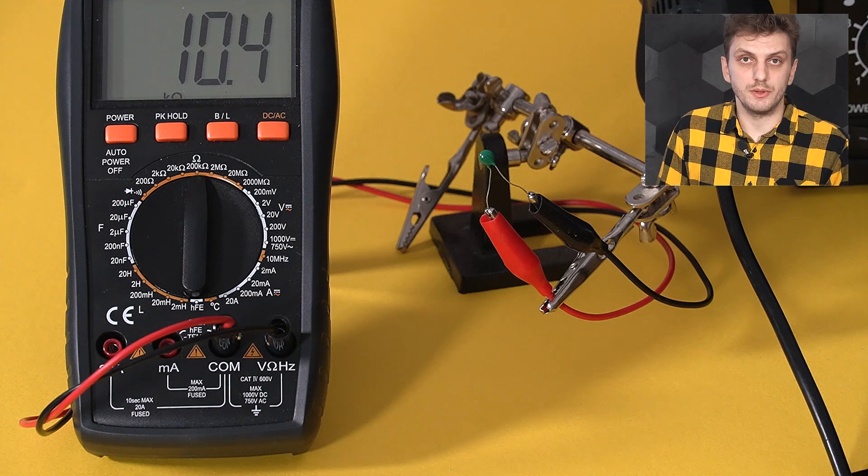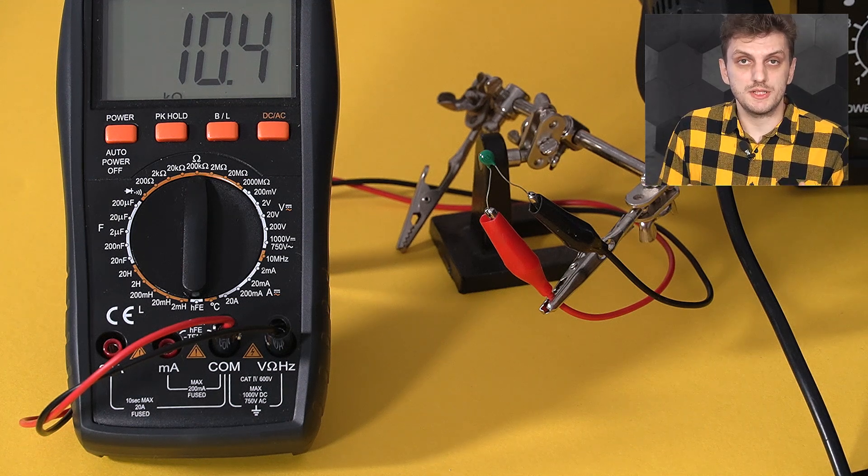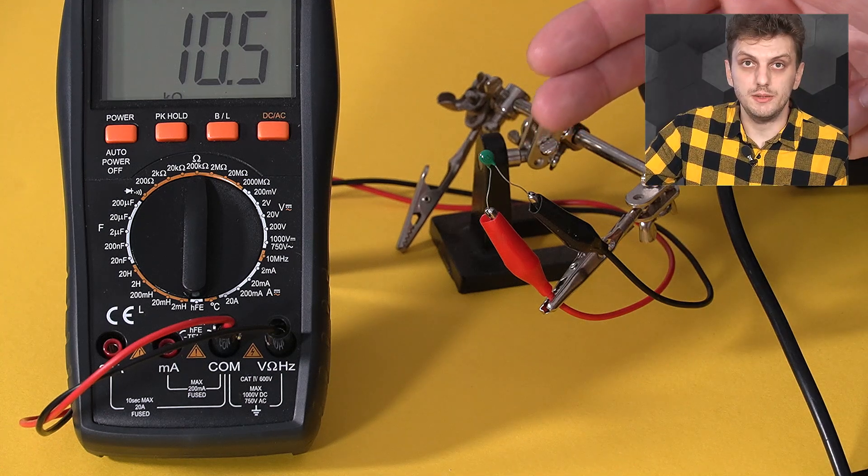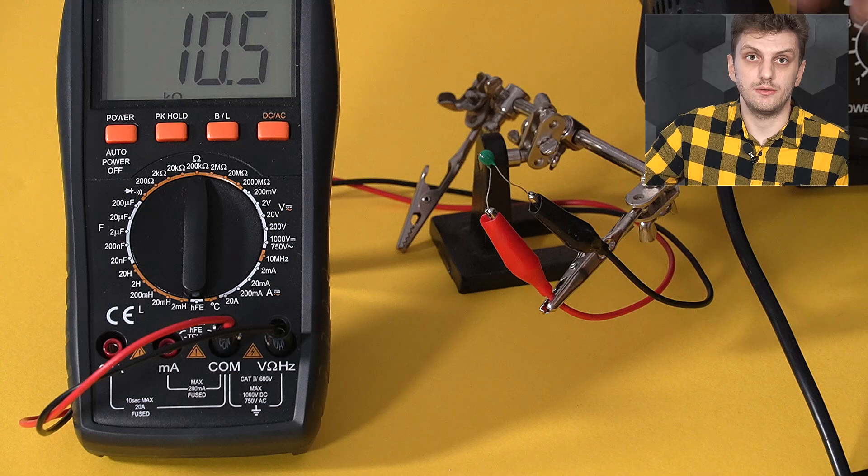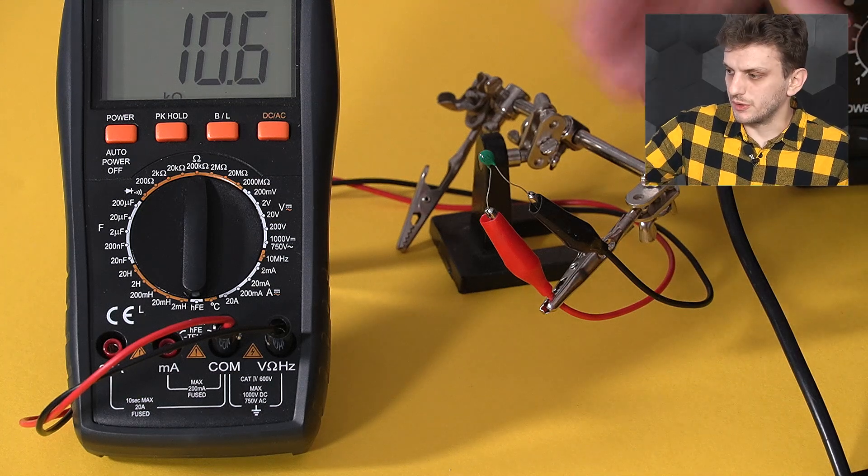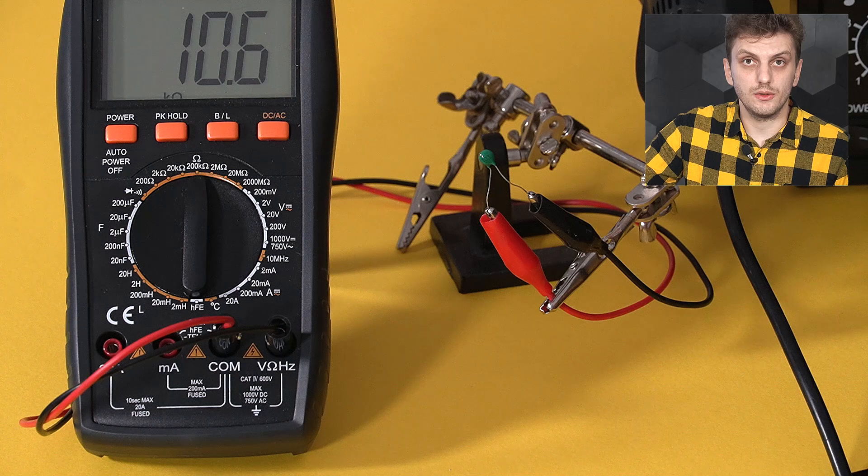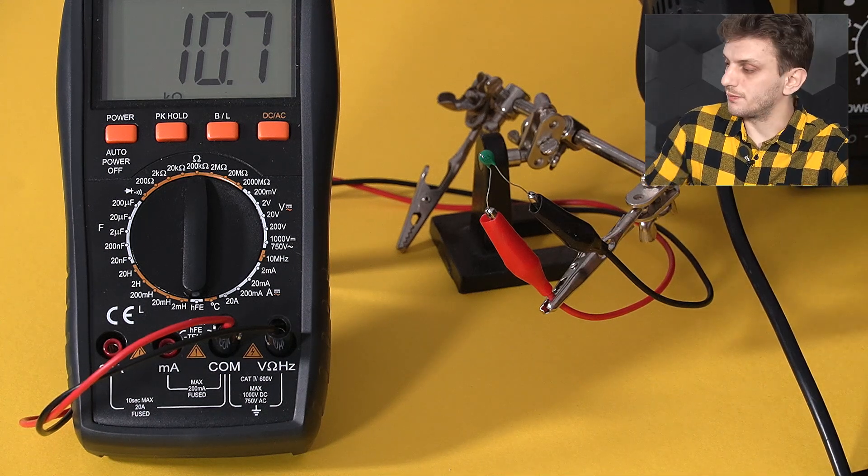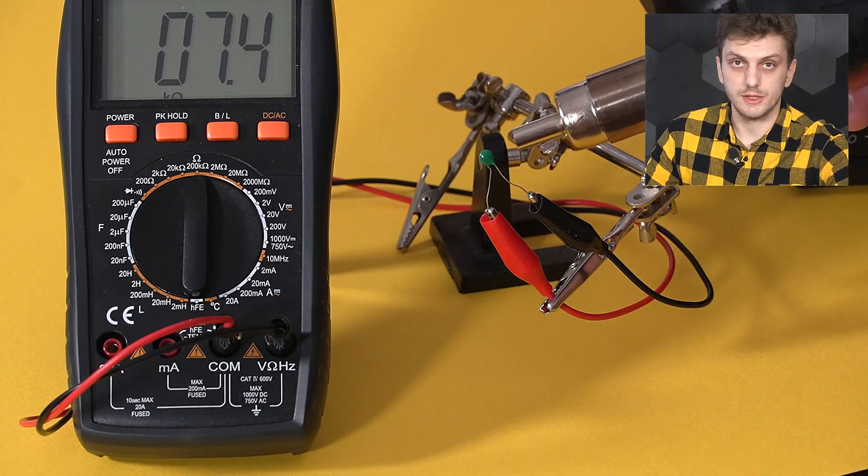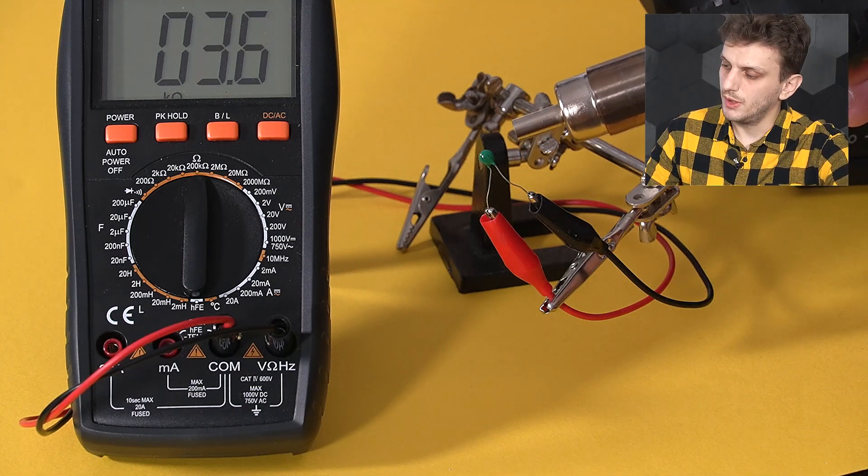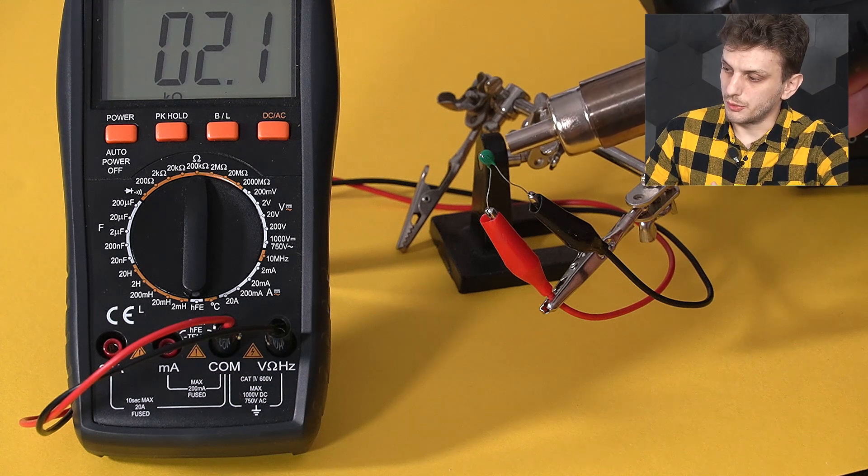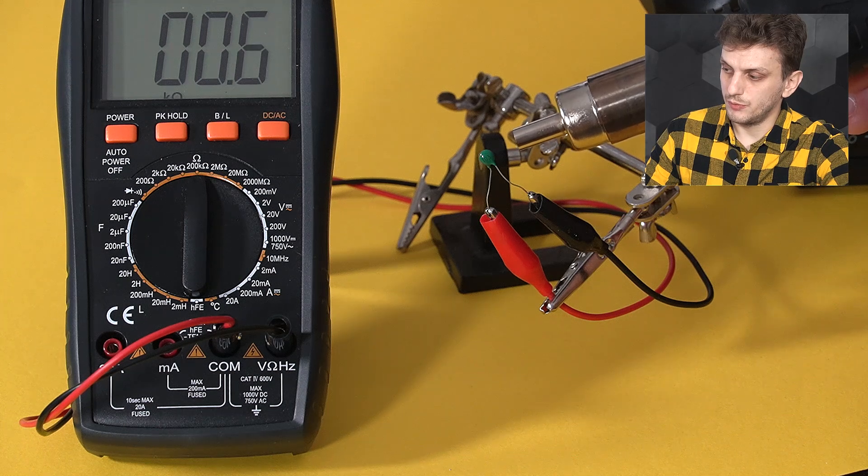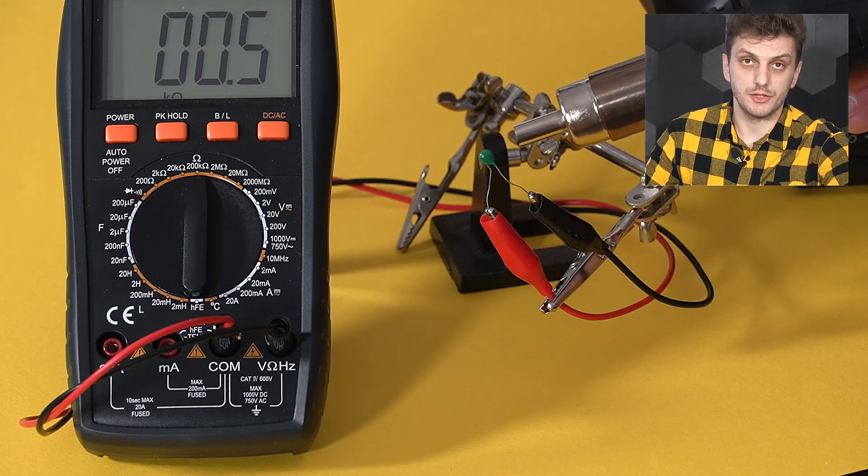An NTC is a variable resistor, so its resistance value will vary with temperature. What I got here is a 10 kilohm NTC. It has 10 kilohms at 25 degrees Celsius. Right now it's a bit colder, so its value is a bit larger than 10 kilohms. We can see how its value will vary when we change its temperature. If I increase the temperature using a hot air gun set to 150 degrees Celsius, we can see a very dramatic drop in resistance value. This NTC will go down to about 200 ohms at plus 150 degrees Celsius.